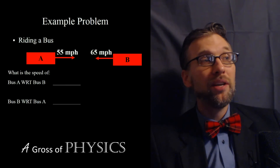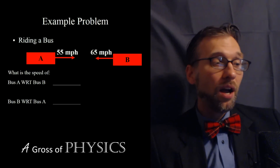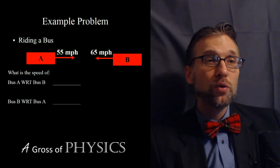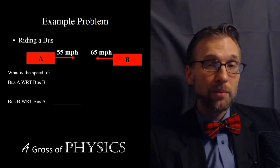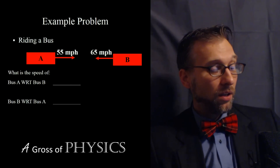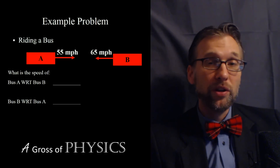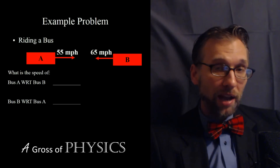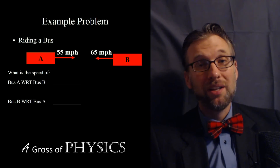Frame of reference can involve either addition or subtraction. The math isn't difficult — when in doubt, use a calculator. If traveling in the same direction, typically subtract the two numbers. If traveling towards one another, typically add the numbers. Make sure you know which object is the one you're making the observation from and which object you're making the observation of.